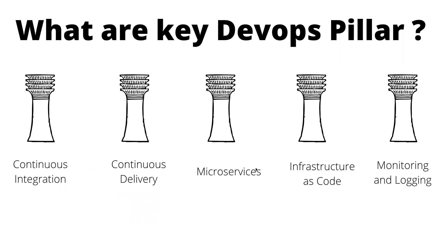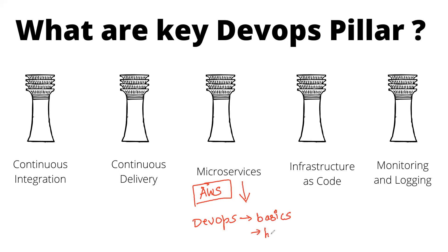After that comes the principles of microservices. This pillar is taken from AWS. As a DevOps engineer, if you know the basics around microservices it is super helpful. You should understand how APIs are built, how databases are connected to APIs, what packages are, and what HTTP requests are. Any company you plan to work with today will be using microservices, so knowing the fundamentals is essential.